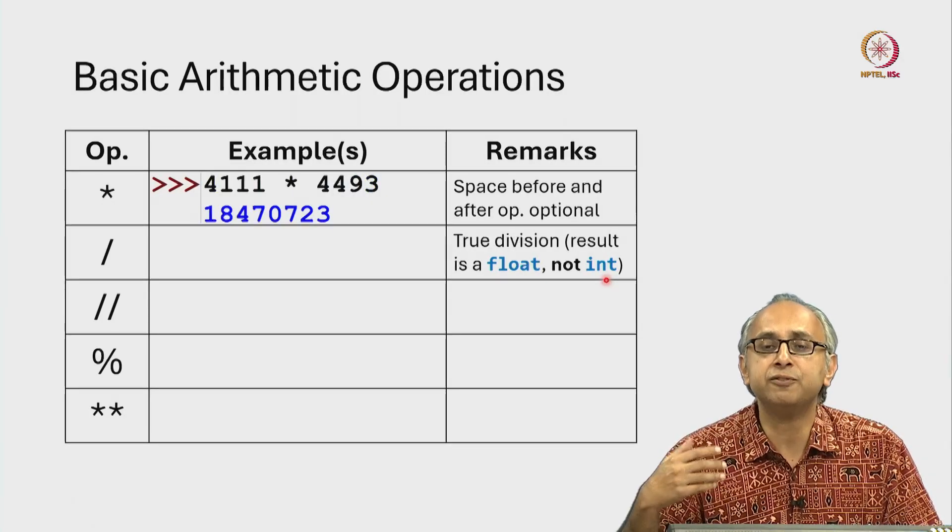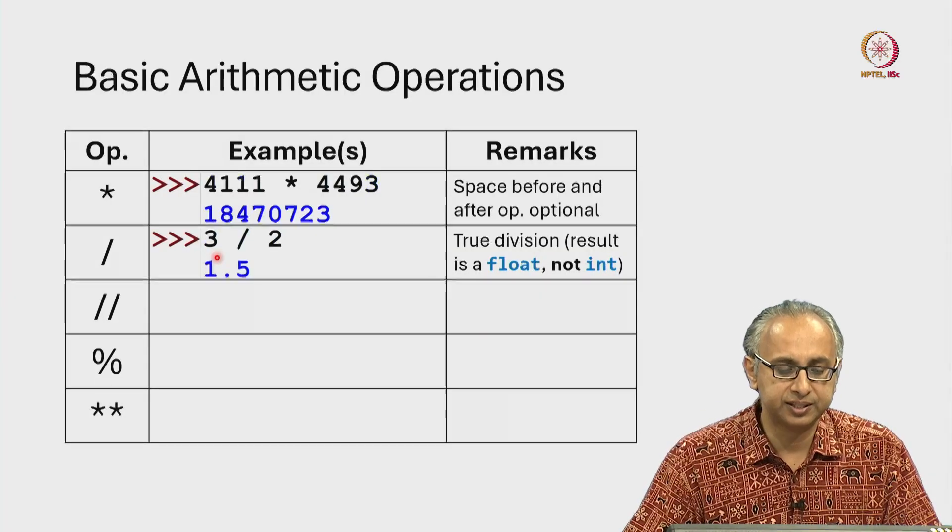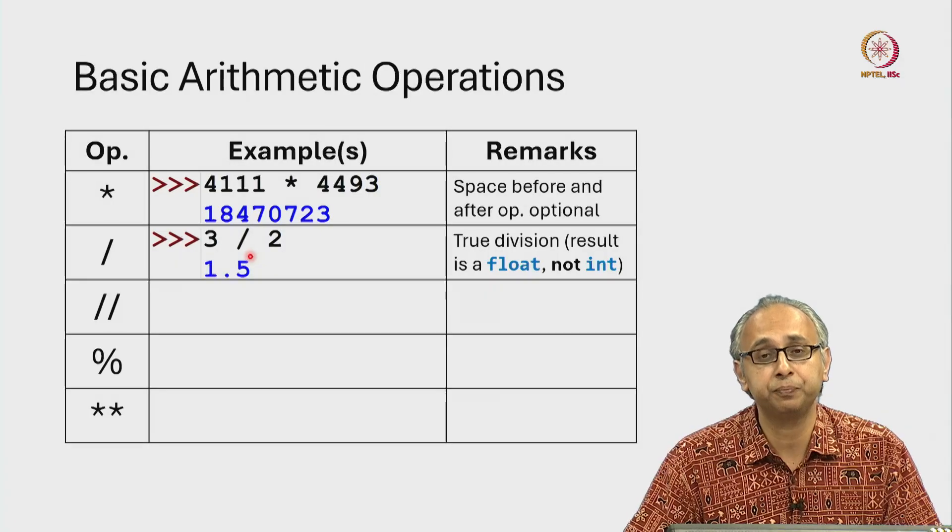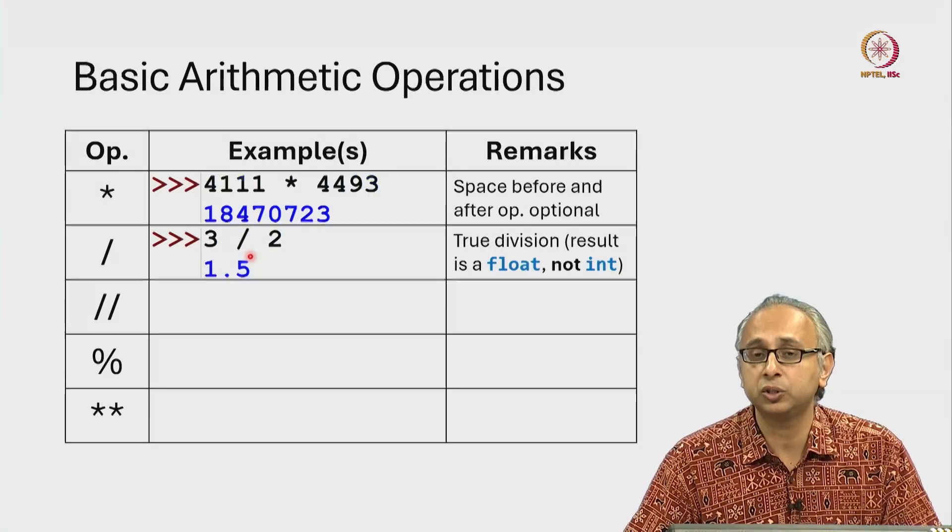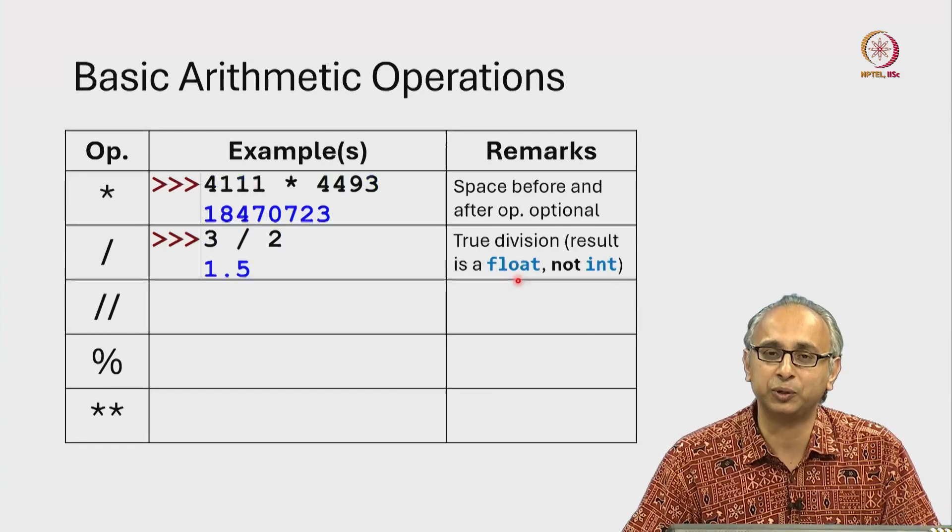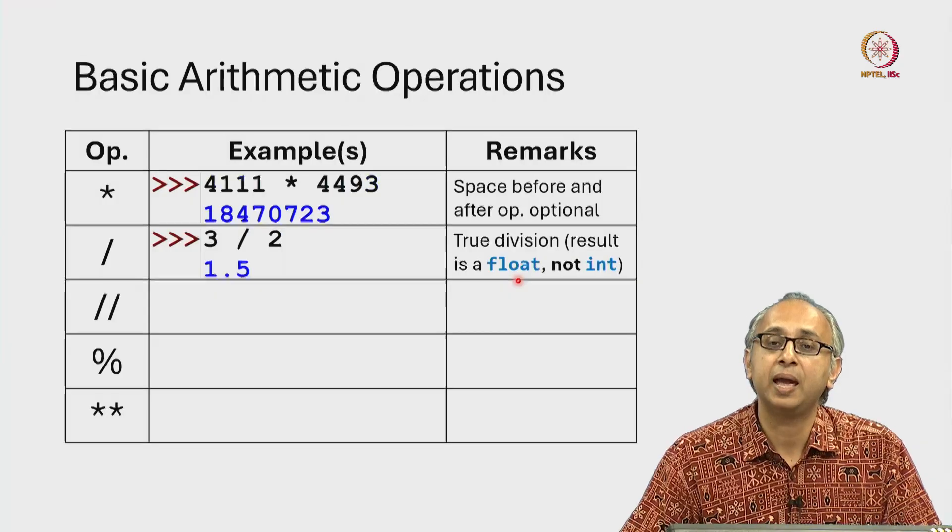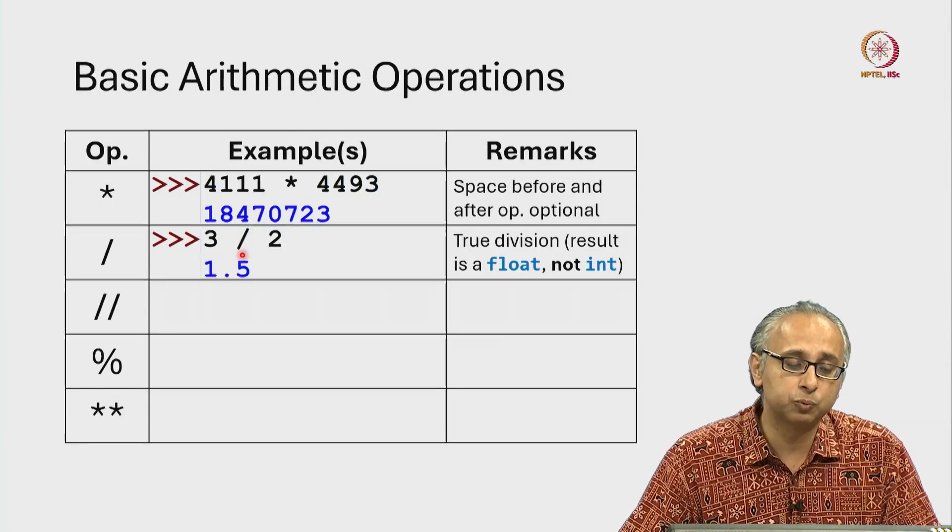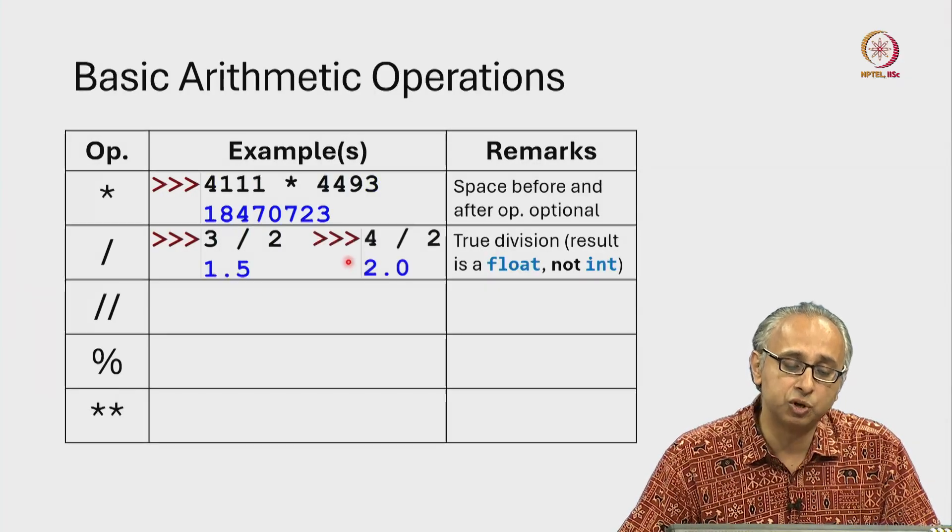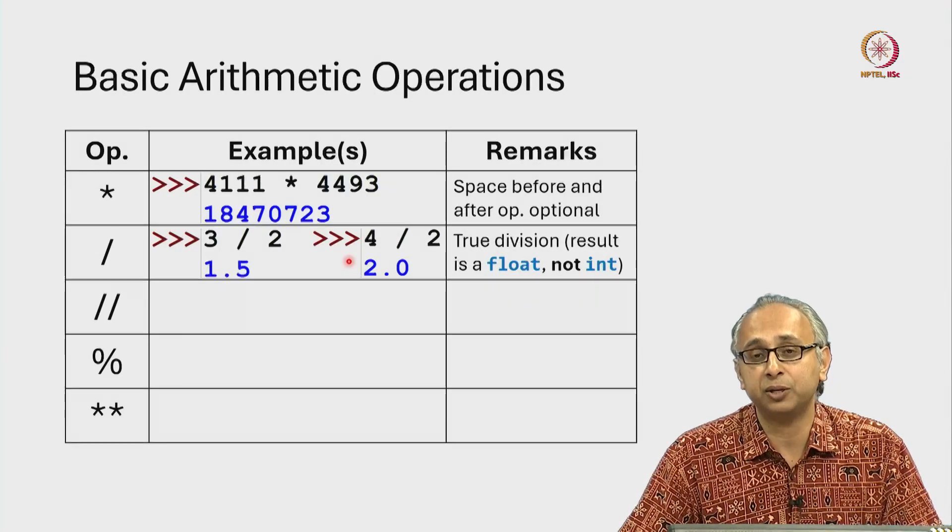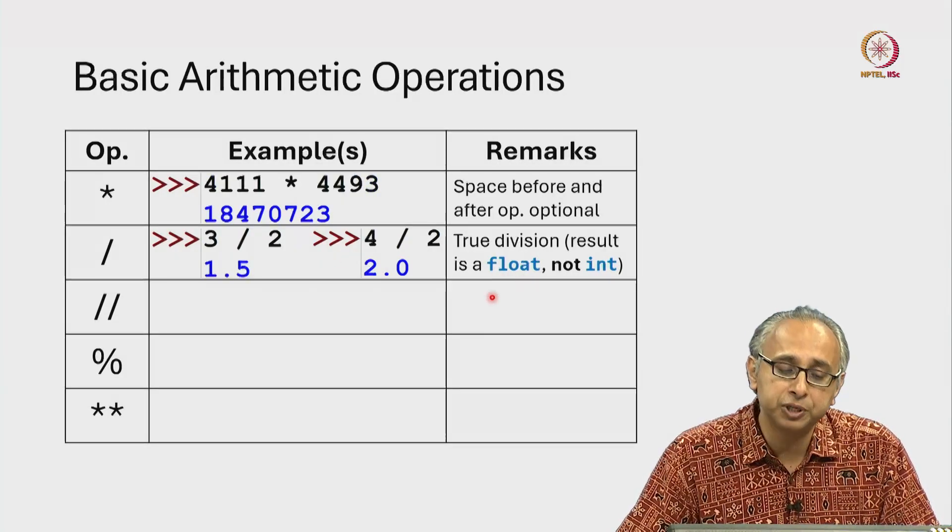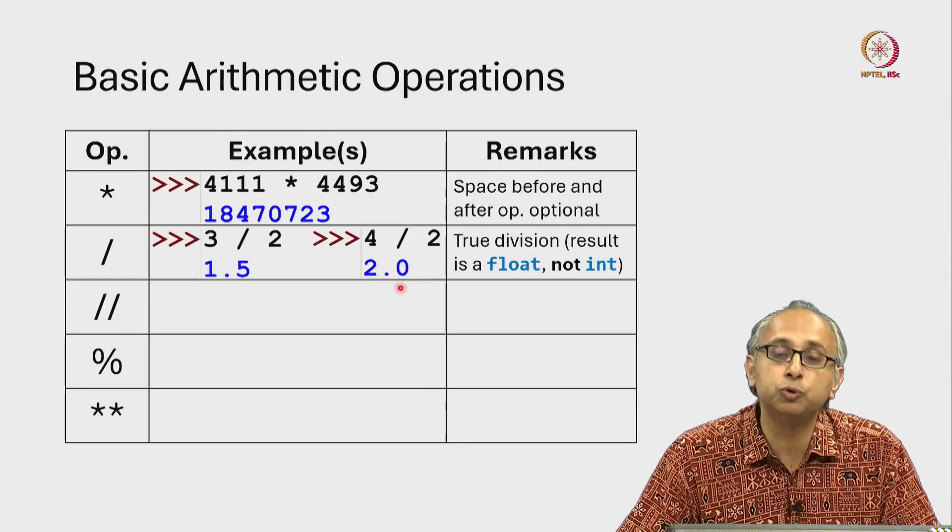If you divide two integers like in this case 3 divided by 2 using the true division operation, the answer is not an integer. It's a special type called float which once again we will take a look at in more detail. And this is not just the case when the answer is a fraction, 3 divided by 2 is of course 1.5. But even if the answer is not a fraction, 4 divided by 2 is the integer 2. But because the answer of true division is always a float, it will be represented as 2.0.